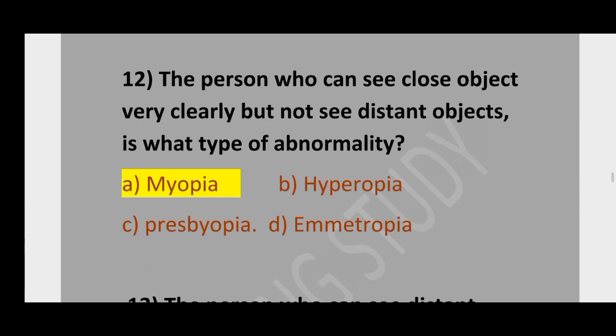Question number 12. The person who can see close objects very clearly but cannot see distant objects — what type of abnormality is this? Option A, myopia; option B, hyperopia; option C, presbyopia; option D, ametropia. The correct option is myopia.